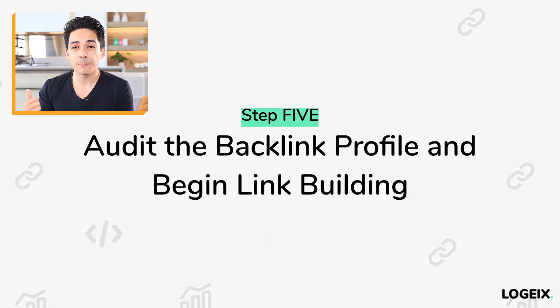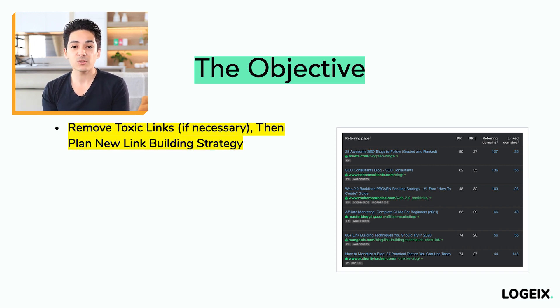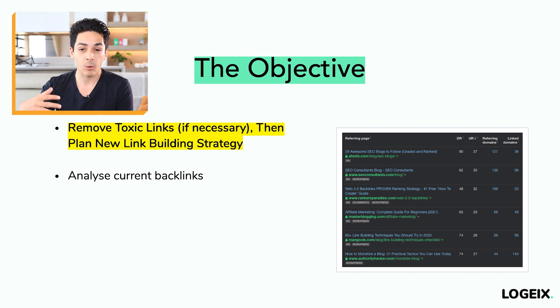Step number five is to audit the backlink profile and begin link building. You'll really need a tool like Ahrefs to analyze backlinks — backlinks are links pointing to your website from other websites and are a big ranking factor. Ahrefs starts at $99 a month, which is expensive but worth it for the data. The objective is to remove toxic links if necessary and then plan a new link building strategy. Start by analyzing and auditing your current backlinks — even if you're a brand new website, double-check because you may have bought a domain with a history of toxic links.